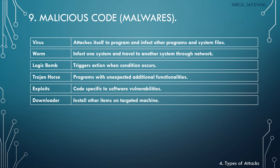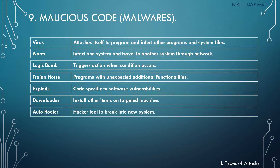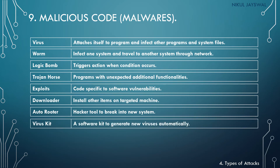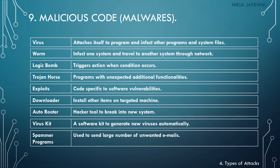Next is downloader — it installs other items on the targeted machine. For example, if you are downloading Microsoft Office from a website, it may also install other malicious items. Next is auto rooter — a hacker tool to break into new systems. Then virus kit — software kits to generate new viruses automatically, helping the attacker create and spread viruses to targeted systems. Next is spammer program — used to send large numbers of unwanted emails.